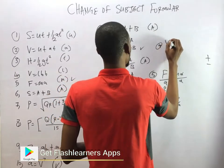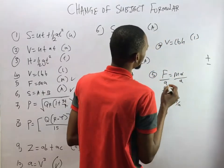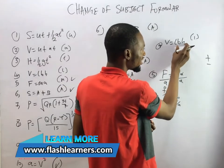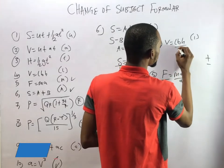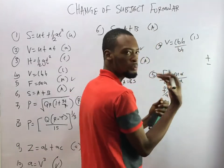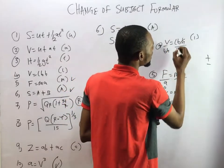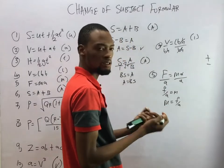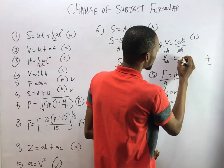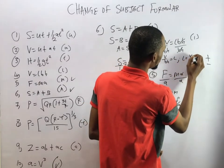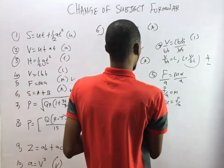Question 4 says V equals LBH and we need L as the subject formula. L, B, and H are joined by multiplication, so we divide both sides by what we don't need — BH. BH divided by BH cancels, leaving L. So V over BH equals L, which means L equals V over BH.